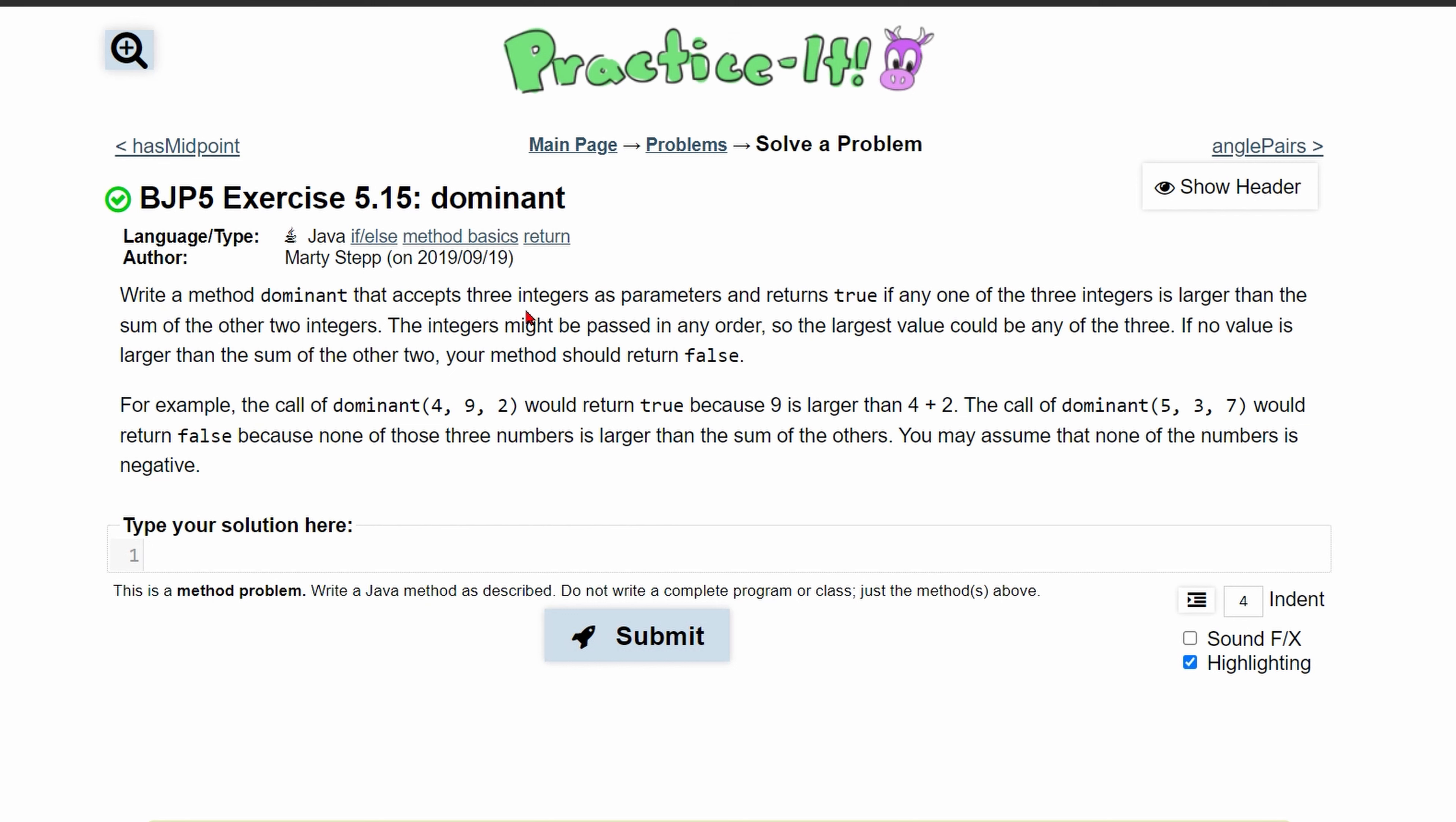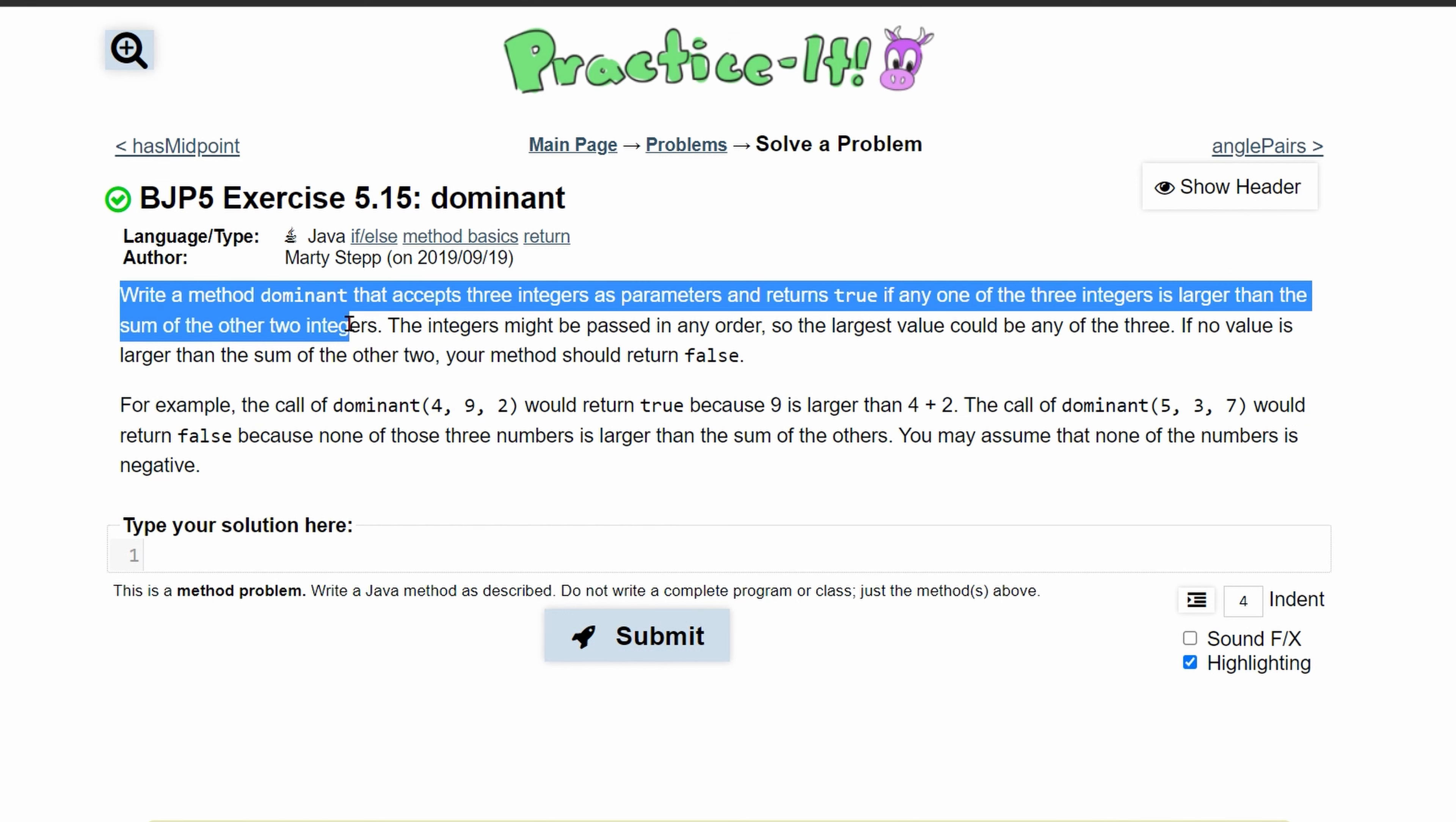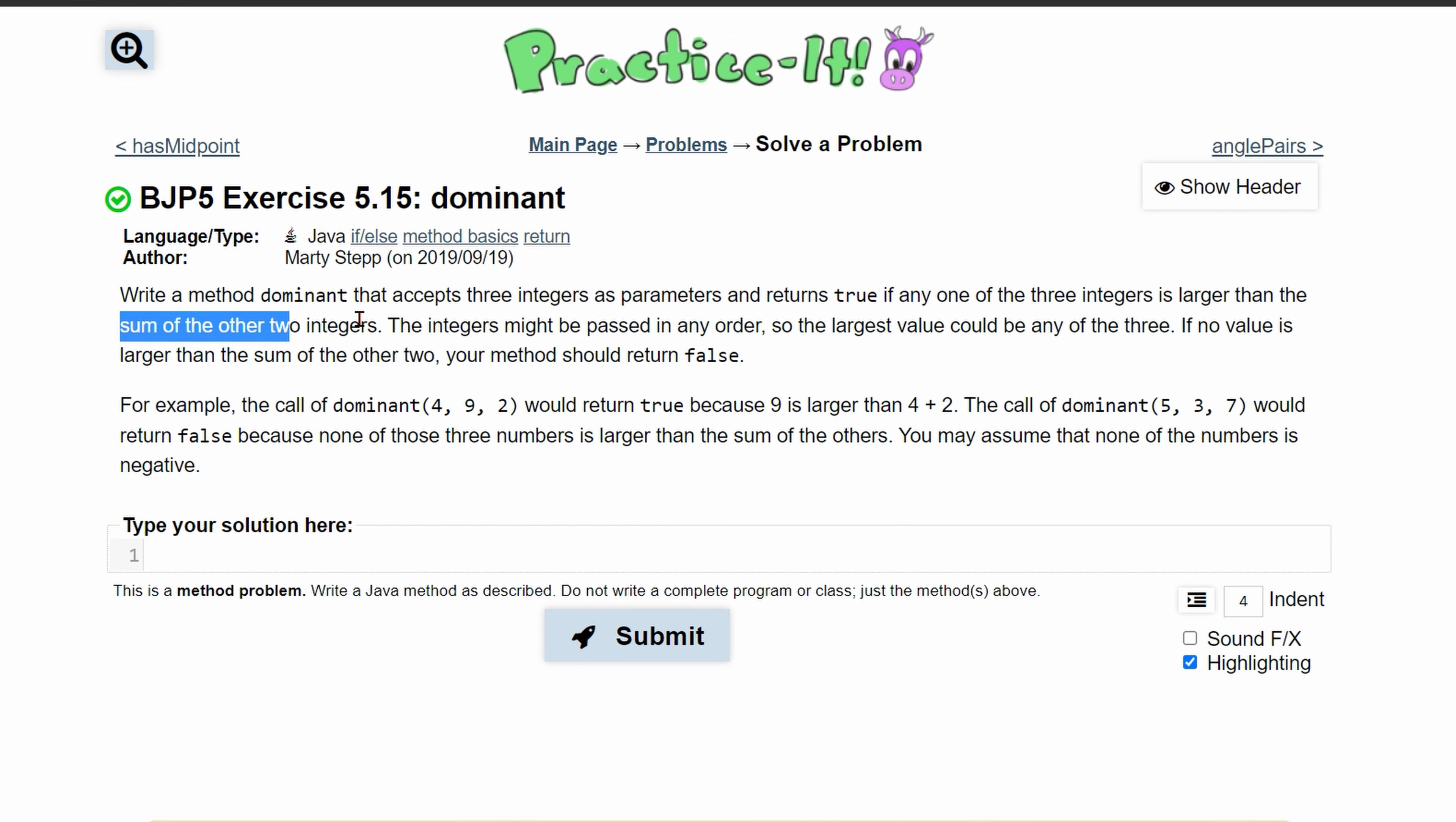For this practice exercise 5.15 dominant, we need to write a method dominant that accepts three integers as parameters and returns true if any of the three integers is larger than the sum of the other two integers.